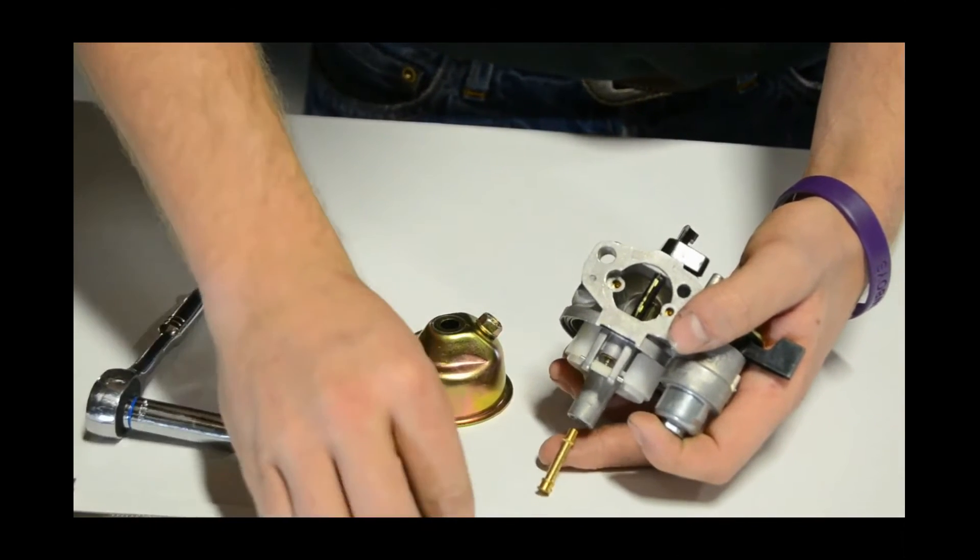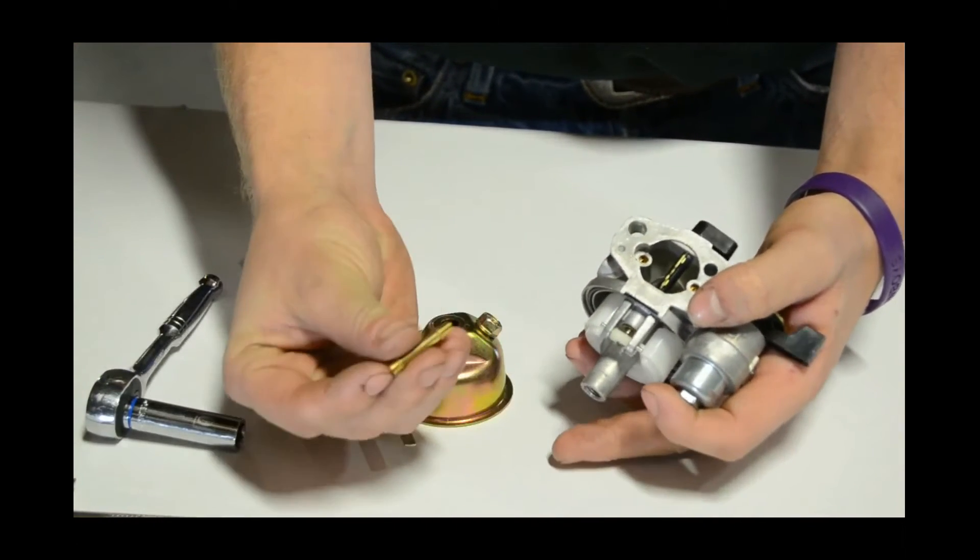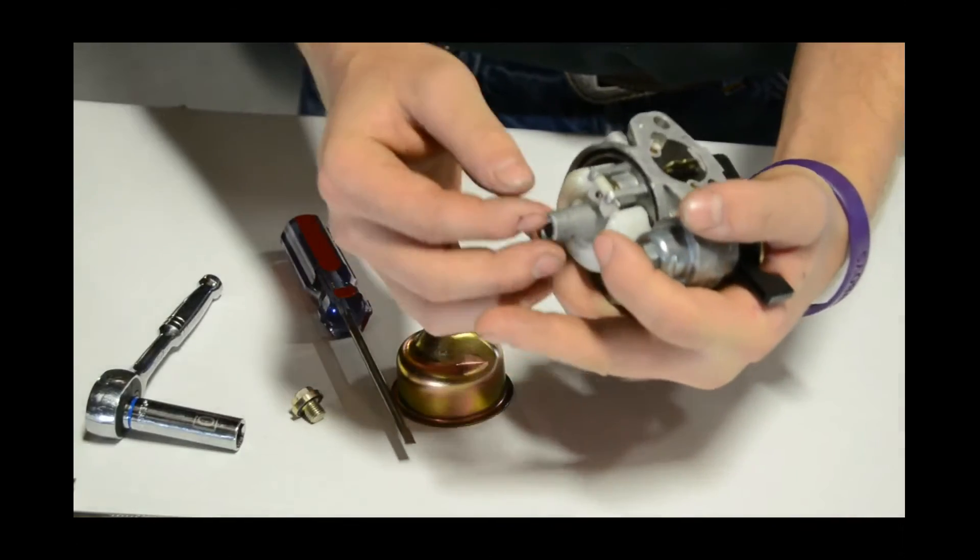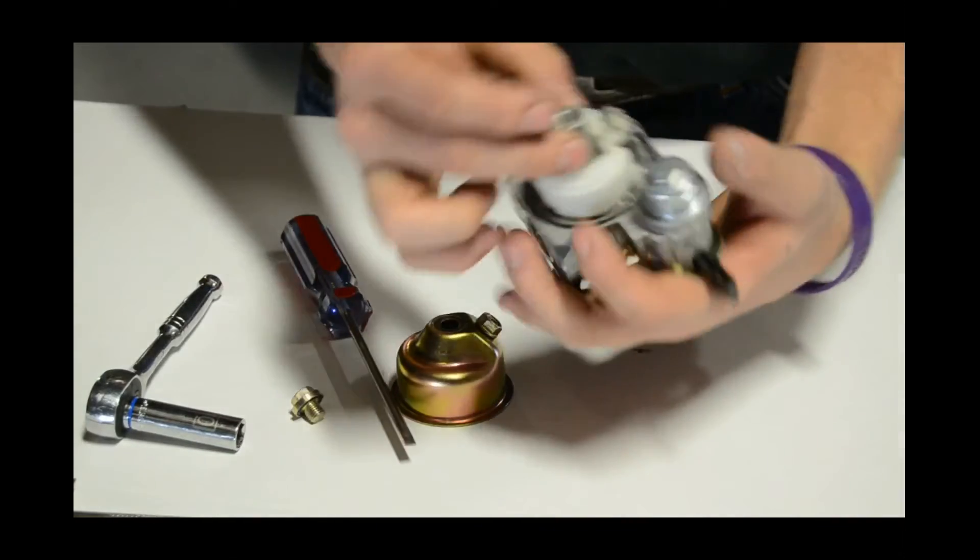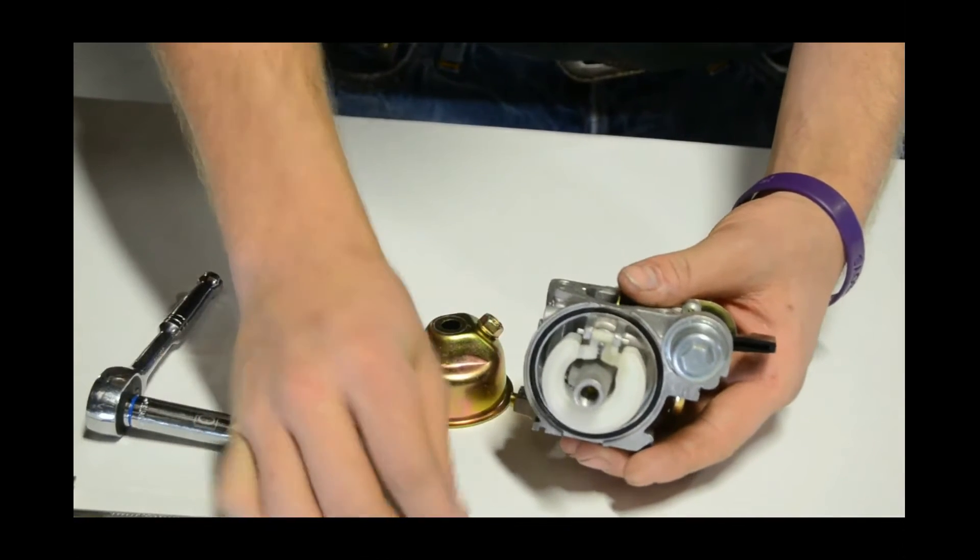Okay, now there's your main jet and your E-tube. For this carburetor application, we're simply going to be adding the E-tube right back to the carburetor.